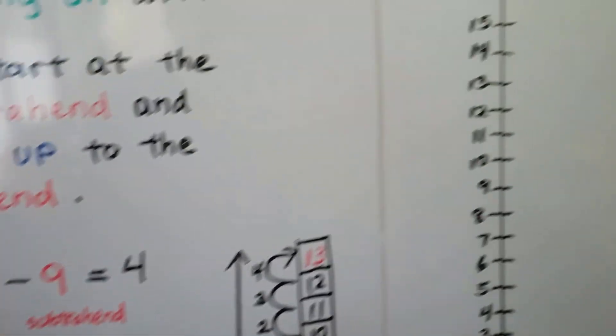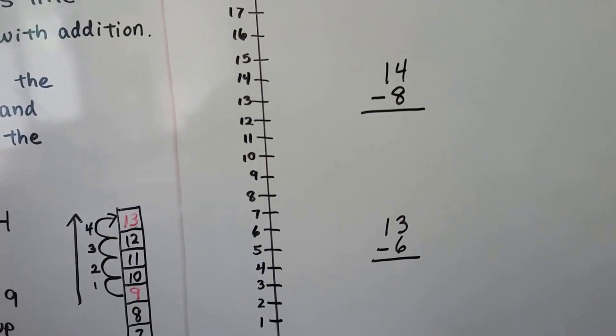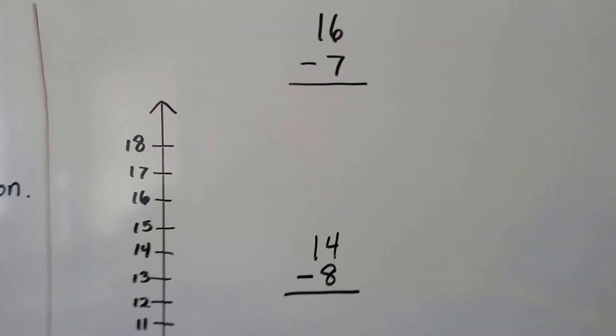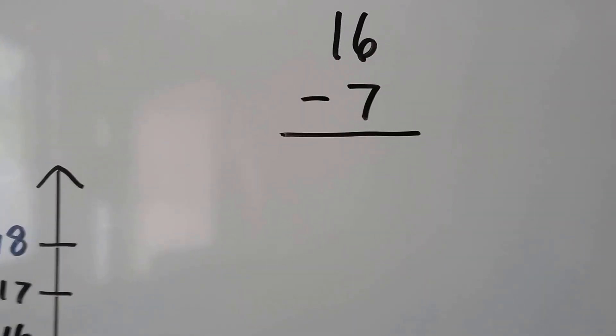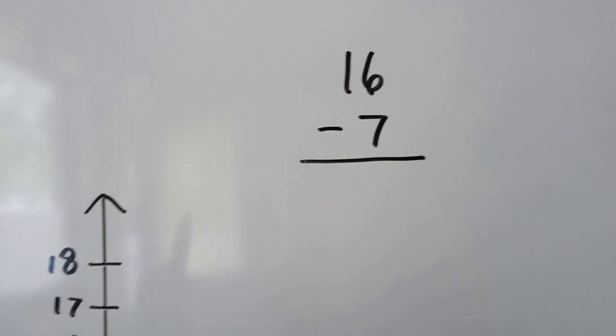Let's try another one. Here we've got a number line going from 0 all the way up to 18. We can do 16 minus 7 by counting up. We find 7 on the number line and count up to 16.